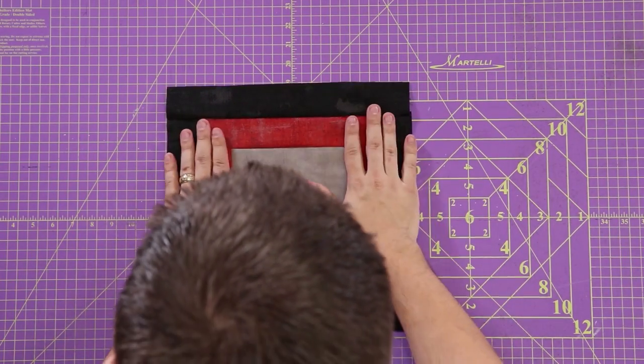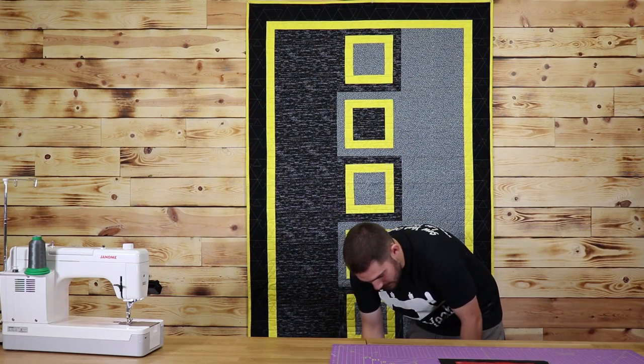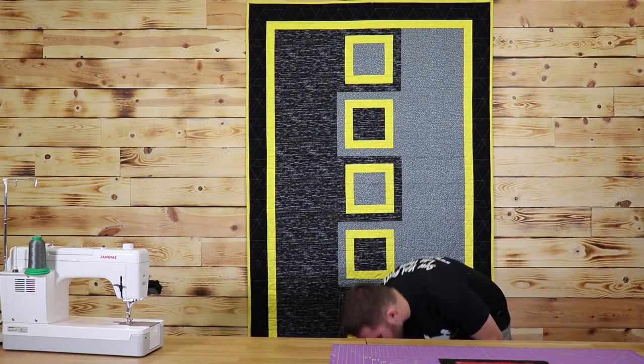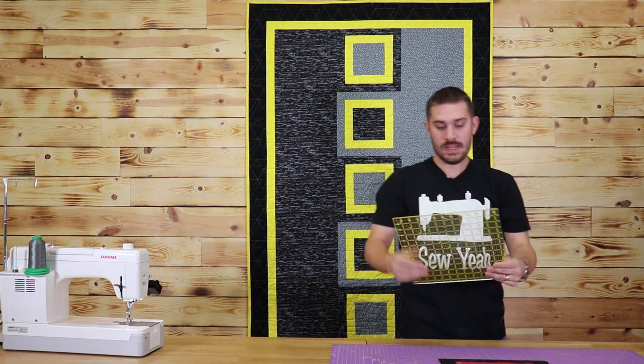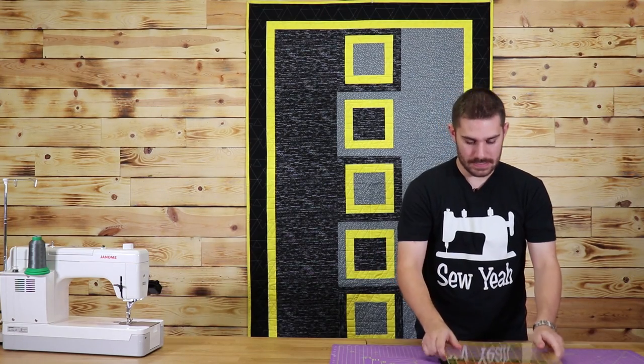So I just ironed this all out and it is looking great. So our next step is, if I can find my ruler for this, there it is. You'd need a big ruler for this. About a 12 and a half by 12 and a half is the most ideal.